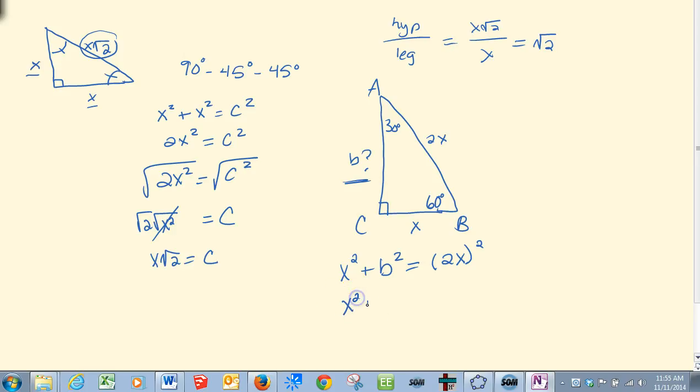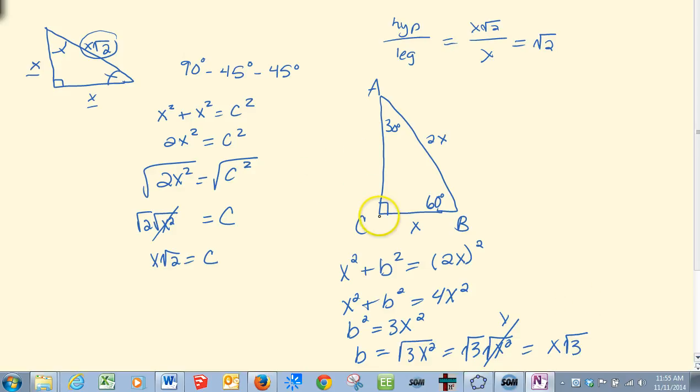So x squared plus b squared equals 4x squared. I'm subtracting x squared from both sides. b then equals the square root of 3x squared, which equals the square root of 3 times the square root of x squared, which can be simplified. So I have x square root of 3 in the position for b always. So it's always the shorter leg multiplied by the square root of 3.